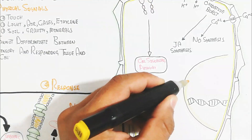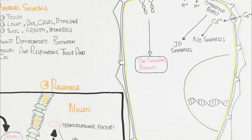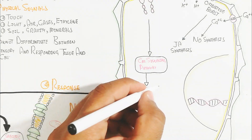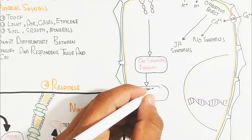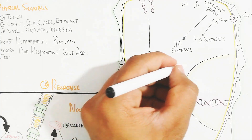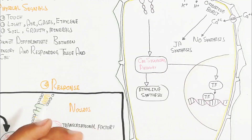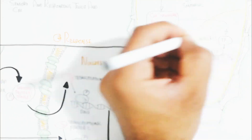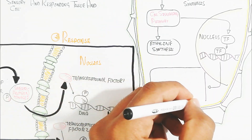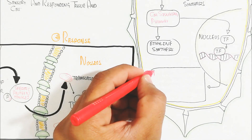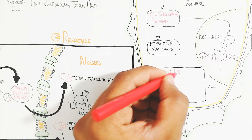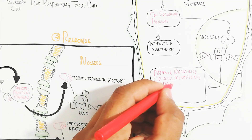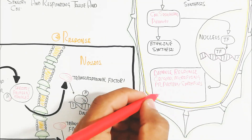The cell signaling pathway also enters the nucleus through transcription factor activation. These factors bind to DNA to produce expression of specific defense-related genes. Translation of these genes produces defense proteins, cell wall modification proteins to combat the pathogen, and contributes to resistance.